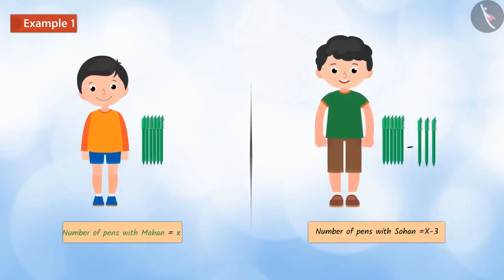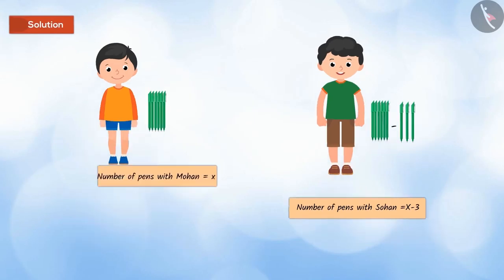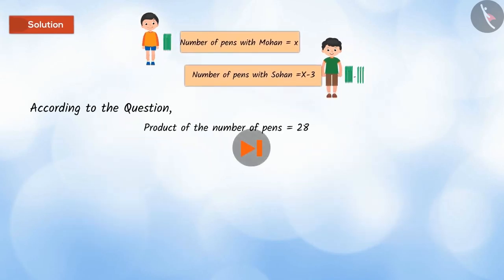The number of pens with Sohan is 3 less than the number of pens with Mohan, and the product of the number of pens is 28. Is this possible? Pause the video and write the quadratic equation for this situation and then match it with the video.